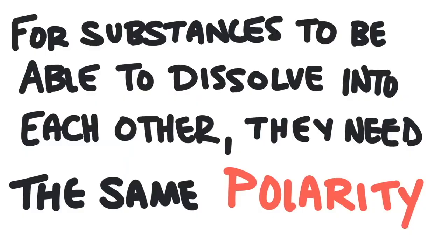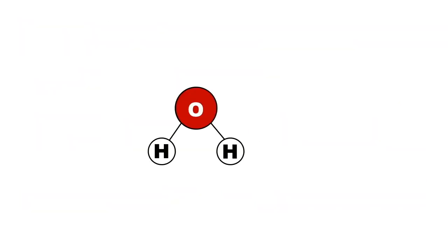For a substance to be able to dissolve into a liquid, they have to have the same polarity. To put it simply, when we zoom down to the molecular level, we'll notice that some substances are polar and some are non-polar. Polar substances have charges, plus and minus.